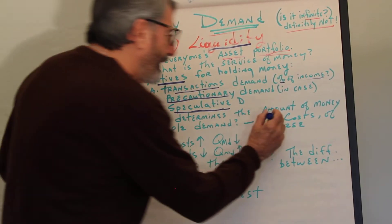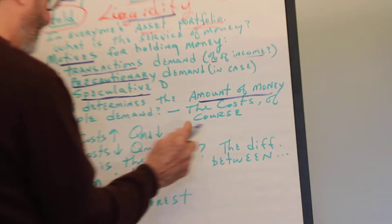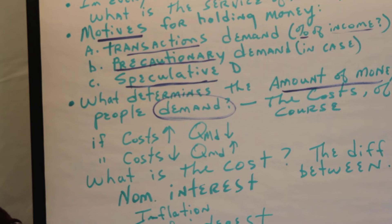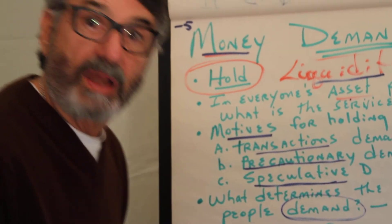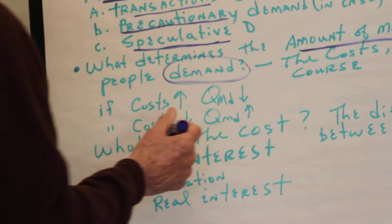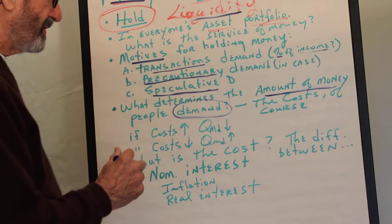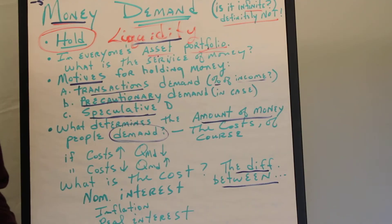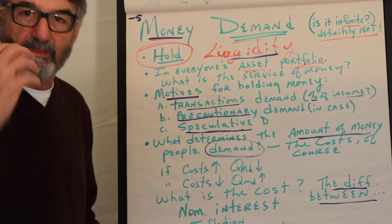What determines the amount of money that people demand? Well, what determines the demand for anything? Other things constant, the costs of that item, whatever it is. So what's the cost of holding money? And the answer is the difference between what the money makes you when you hold it as money, which is essentially nothing. It earns you no interest, it brings you nothing.